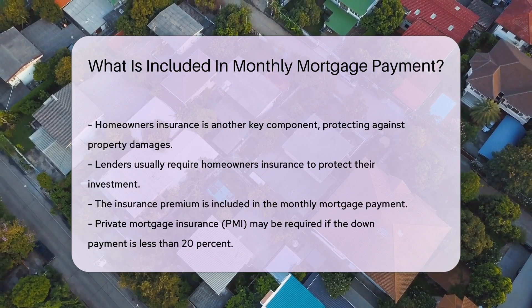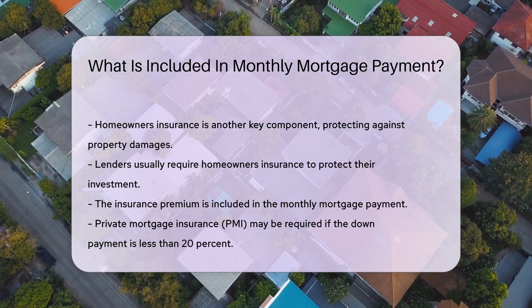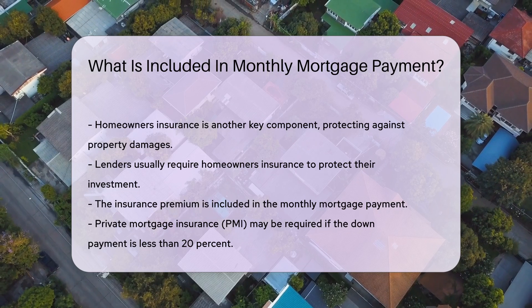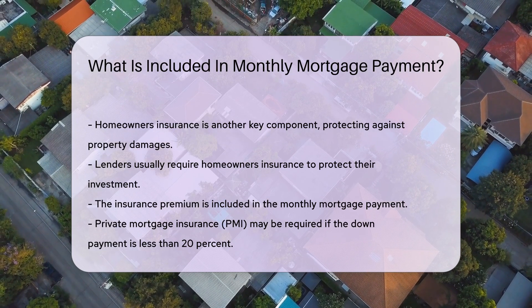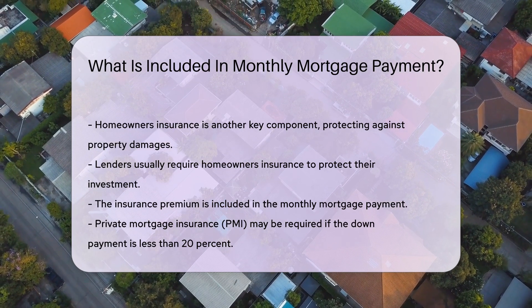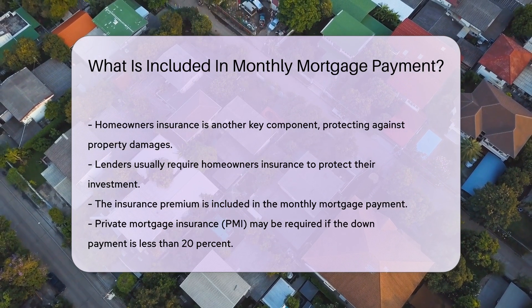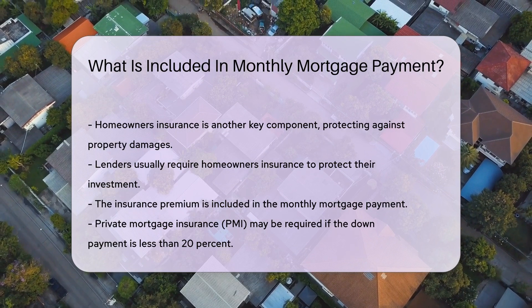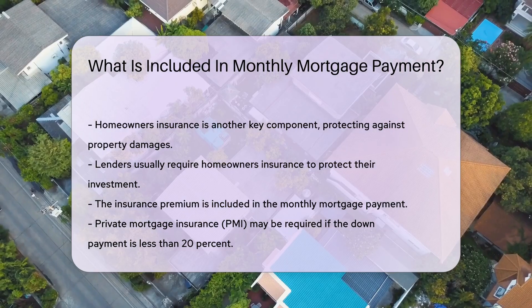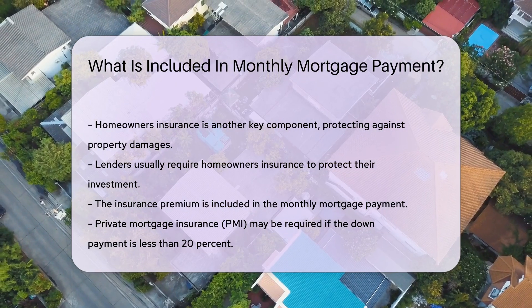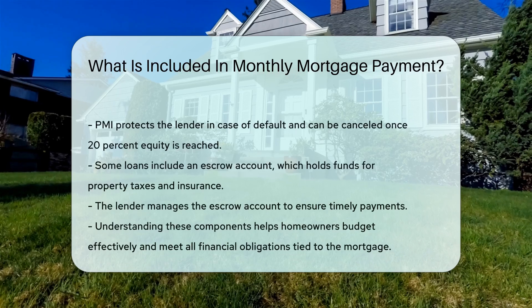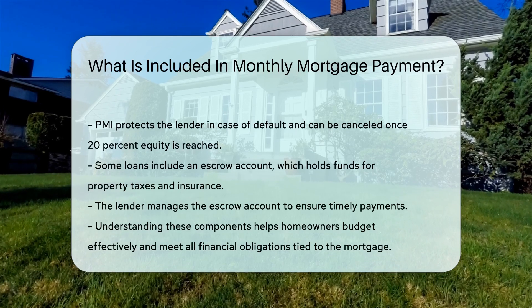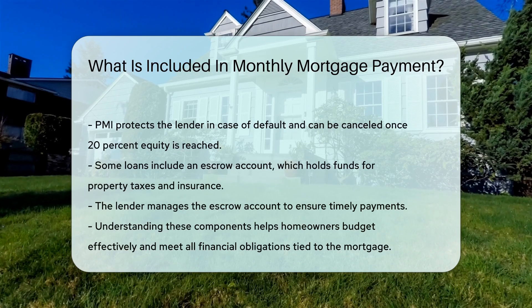Private mortgage insurance, or PMI, may also be part of the payment. PMI is required if your down payment is less than 20%, and it protects the lender in case of default. Once you reach 20% equity, you may be able to cancel PMI.